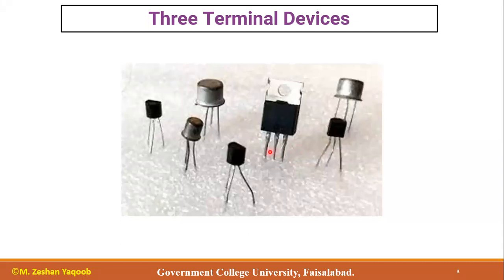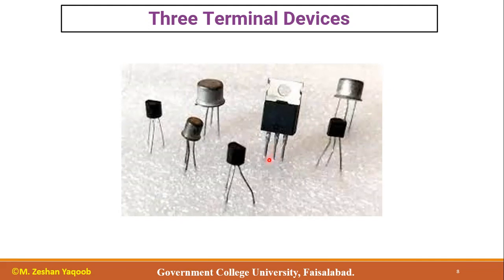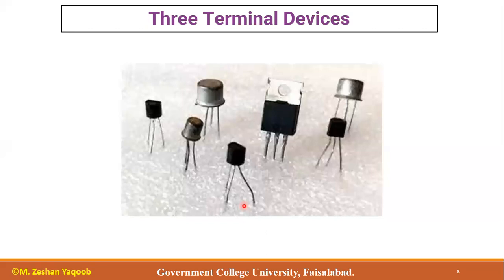Terminals are also called legs, and a transistor has three legs. The method of connecting a three-terminal device is quite different compared to a two-terminal device. We always have to make one terminal common — and when we change which terminal is common, the properties change. This leads to the three configurations: common emitter, common collector, and common base, which is how the bipolar junction transistor (BJT) can be used and studied.